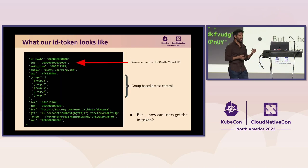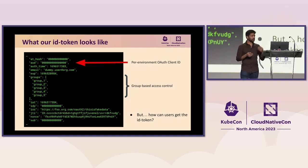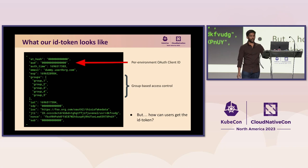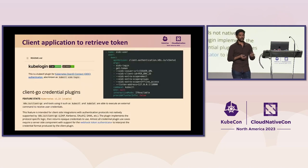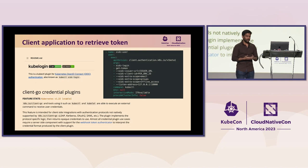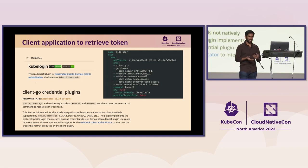A sample ID token includes: AUD, which is the OAuth client ID; the email of the user performing the action; and the groups — the list of groups that email belongs to. To get this ID token and present it to the API server, we used an open source project called KubeLogin, which is a kubectl plugin for performing OIDC login. On the client side, they use the same issuer URL and client ID configured on the API server, extracting email and groups from the OIDC login request.